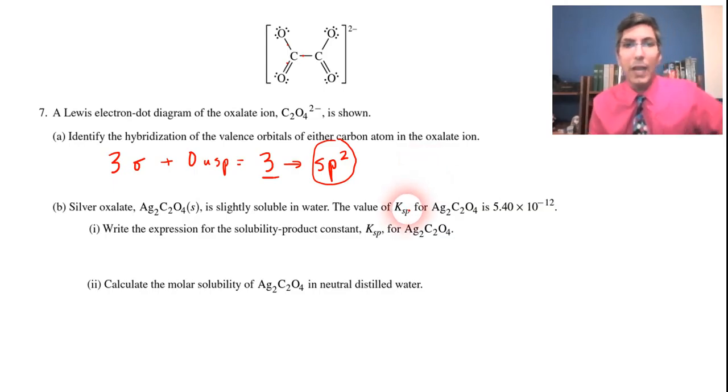Now for part B, we have a KSP question. It says in part one, write the expression for the solubility product constant KSP for the silver oxalate. So what I would do is first of all, write the balanced equation for the dissociation of silver oxalate in water.